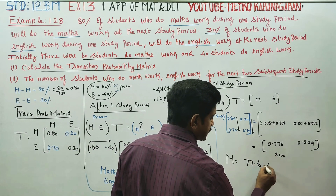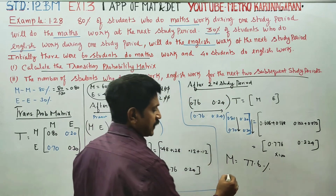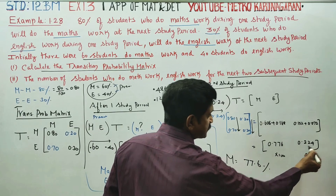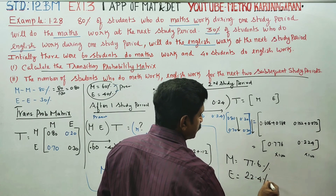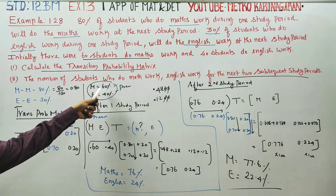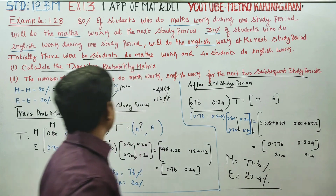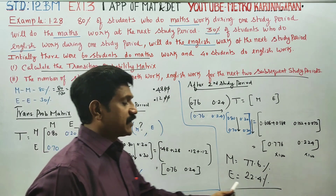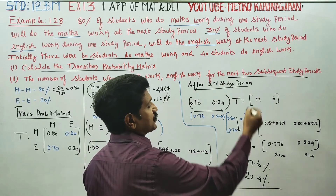The answer for the second period of time is: Maths is approximately 77.6% and English is approximately 22.4%. This is the second study period result.